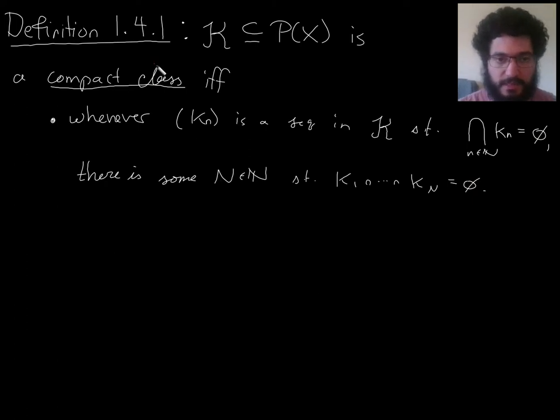Notice this feature of being a compact class is a property of the collection of sets as a whole. It's kind of like algebra of sets, or sigma algebra of sets. It's not a property of individual subsets of x, but a property of this thing as a whole.